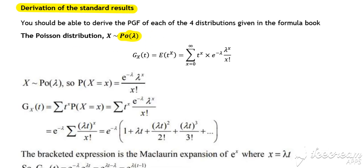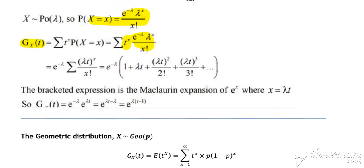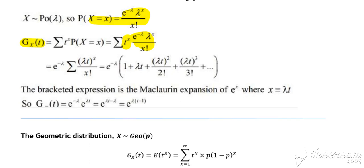We'll start with the Poisson. There's our Poisson probability formula. Our probability generating function is that probability times t to the x, summation of... As we did earlier, we incorporate the t into the bracket with the lambda. We take out the factor of the constant term e to the minus lambda from the front of our summation.